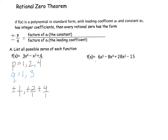After simplifying the fractions, my second set is plus or minus 1 over 3, plus or minus 2 over 3, and plus or minus 4 over 3. So really, the full list of possible zeros is plus or minus 1, plus or minus 2, plus or minus 4, plus or minus 1/3, plus or minus 2/3, and plus or minus 4/3.